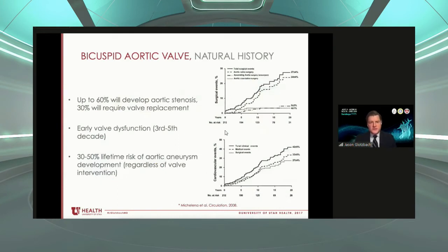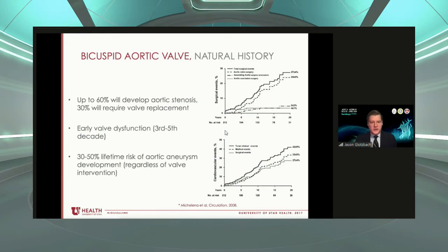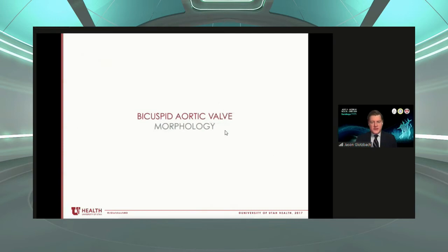The natural history of bicuspid aortic valve: a high proportion will develop some degree of aortic stenosis, and about a third will go on to severe aortic stenosis with symptoms requiring valve replacement. This is often seen much earlier than in patients with normal tricuspid valve anatomy — often in the third to fifth decade of life. In addition to the valve dysfunction, there is a significant risk of aortic aneurysm regardless of valve intervention.